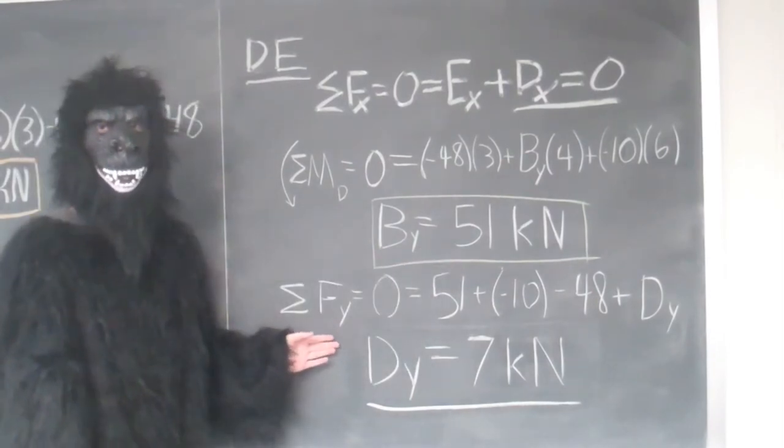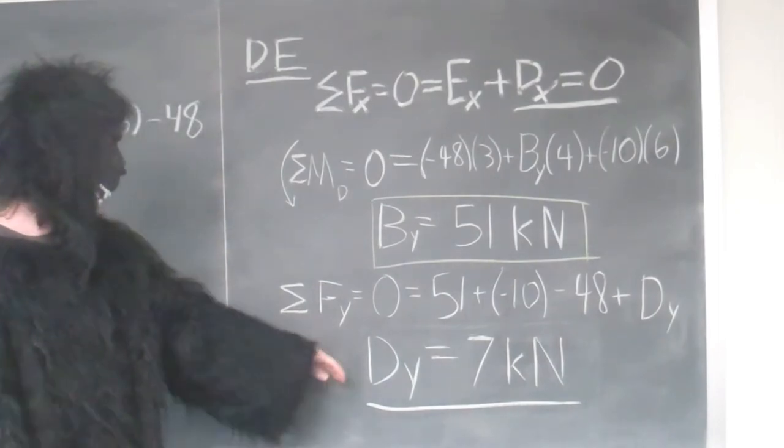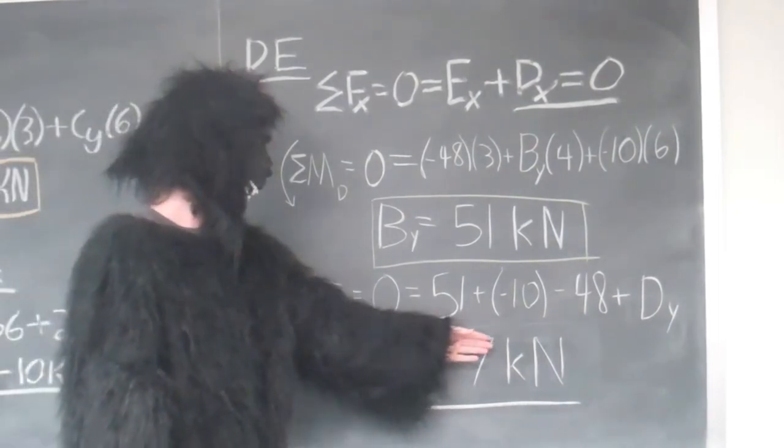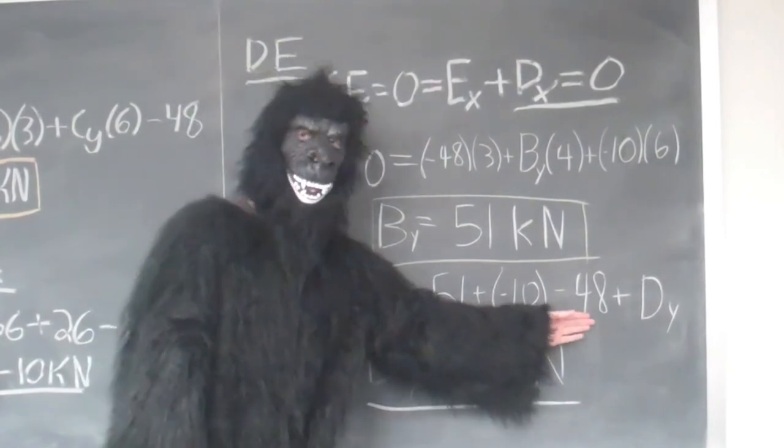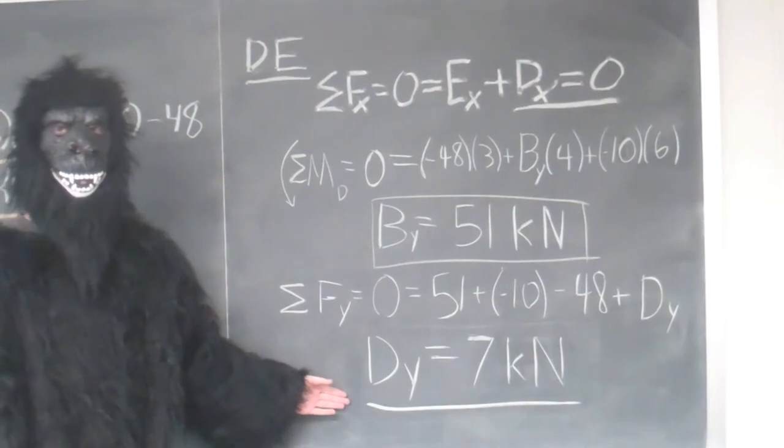Now, we still have to solve for DY in order to solve for the segment of AD. Giving BY, EY, our distributed load, and DY, we get that DY is equal to 7 kN.